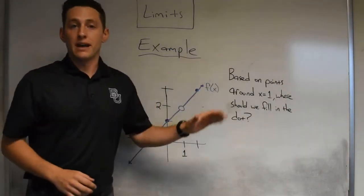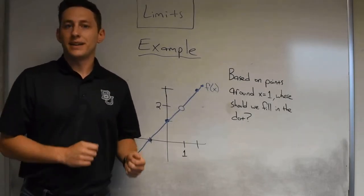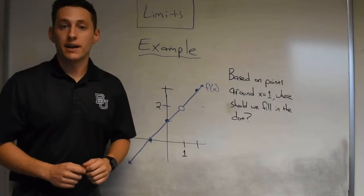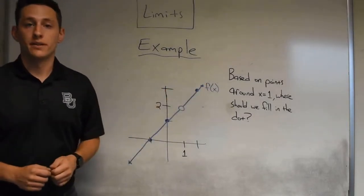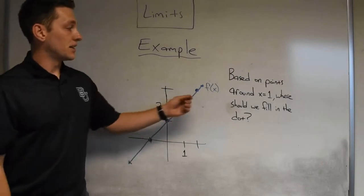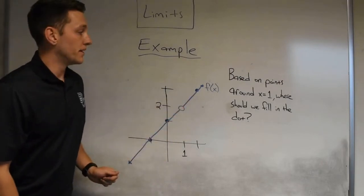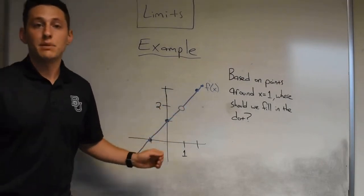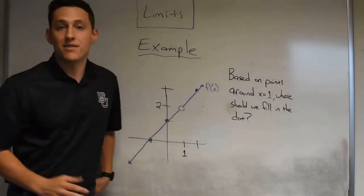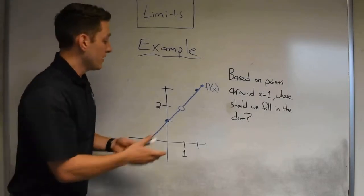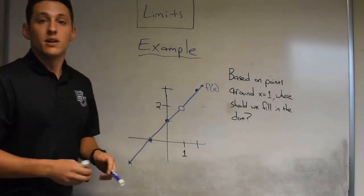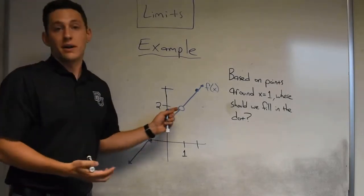Now I have a mathematical example that will really hone in on the idea of limits. I have a picture of a function and here's the question: based on the points around x equals 1, where should we fill in the dot? Meaning, what y value should the point x equals 1 have based on our guesses around it? We can do a couple of things. The first way we can try to discover it would be just to see what the points around it are doing.